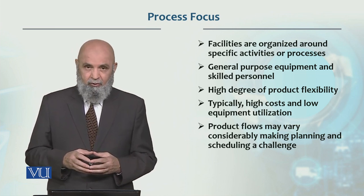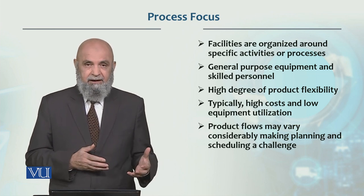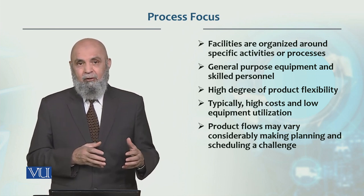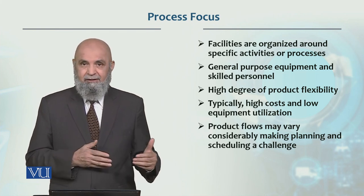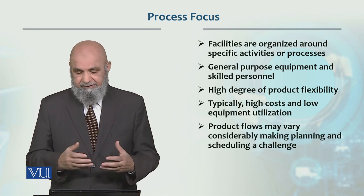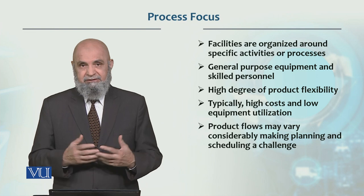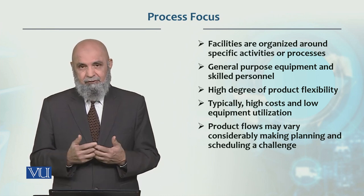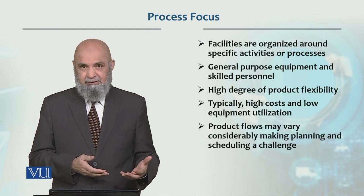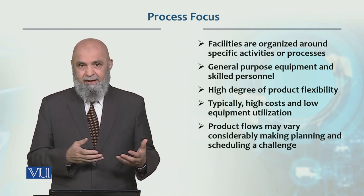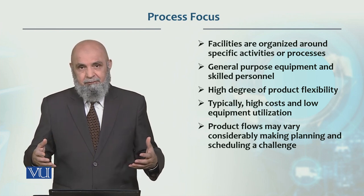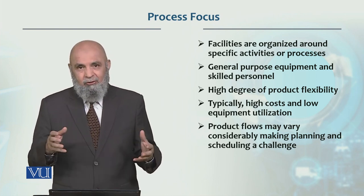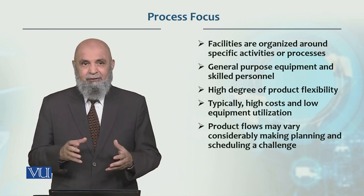There are high costs and low equipment utilization. High cost because workers are highly skilled, but the actual operation time is less and waiting time is more. So equipment utilization is usually low. Because of this, it is extremely challenging to schedule and plan in this type of layout. In process layout, since many different products are being produced at one time, there may be four or five different products lined up waiting for operation on one machine — so scheduling becomes really challenging.